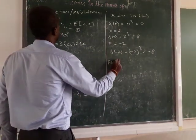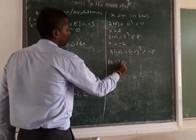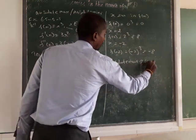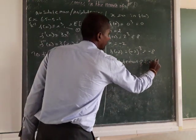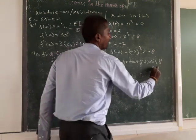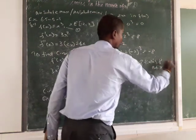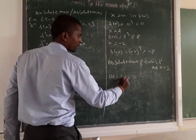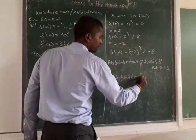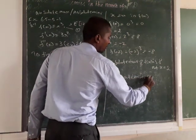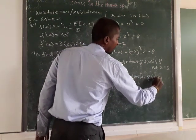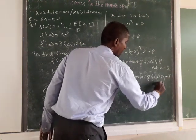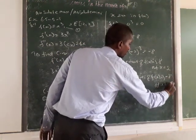The absolute maximum of f of x is 8, at x equal to 2. The absolute minimum of f of x is minus 8, at x equal to minus 2.